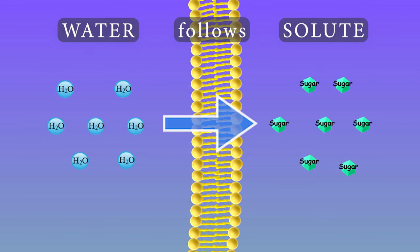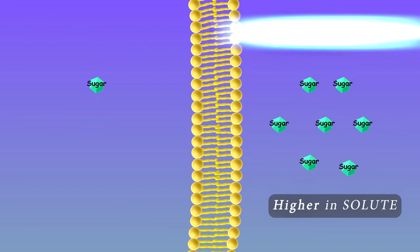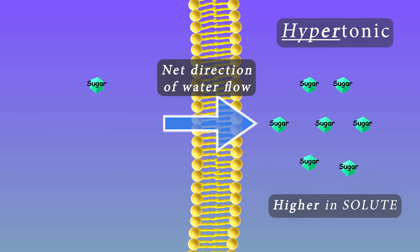But we do use a few terms to describe relative solute concentrations that you need to know. Hypertonic: If we are comparing two solutions, the area with the higher solute concentration is hypertonic. Water will always flow across a membrane toward the hypertonic solution. Remember, water follows solute.